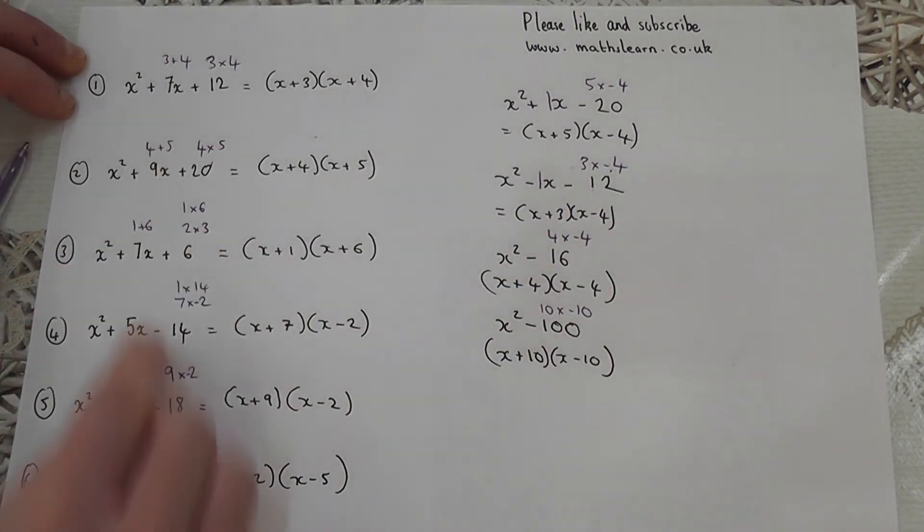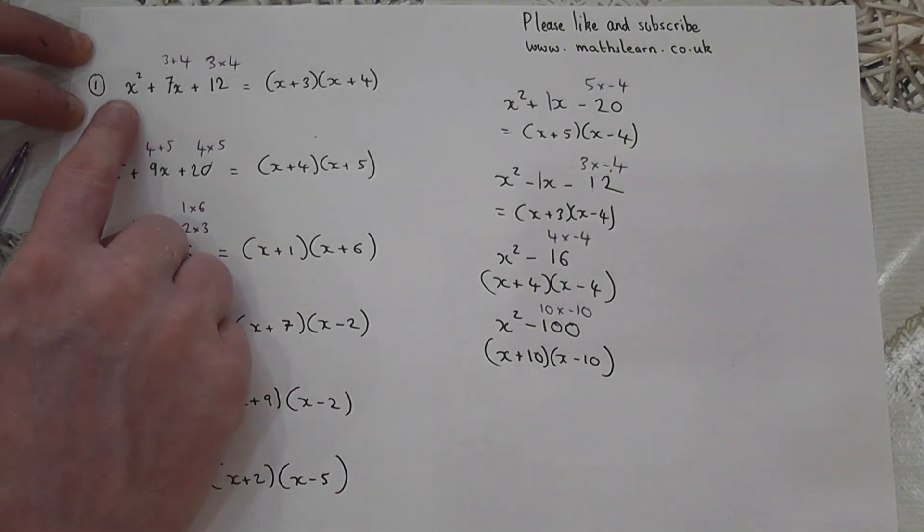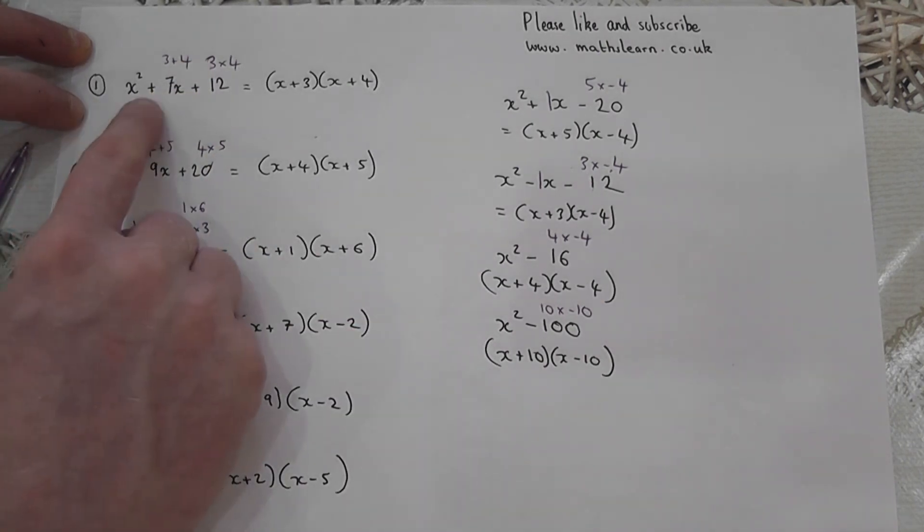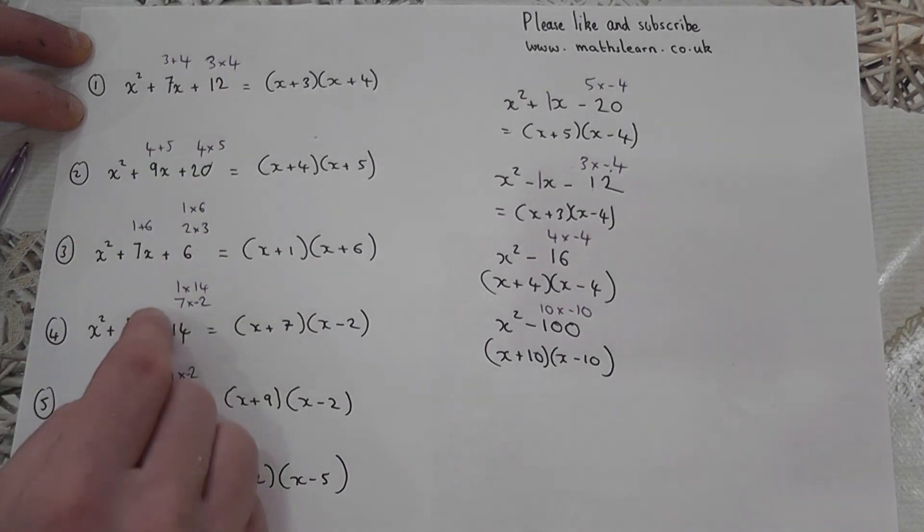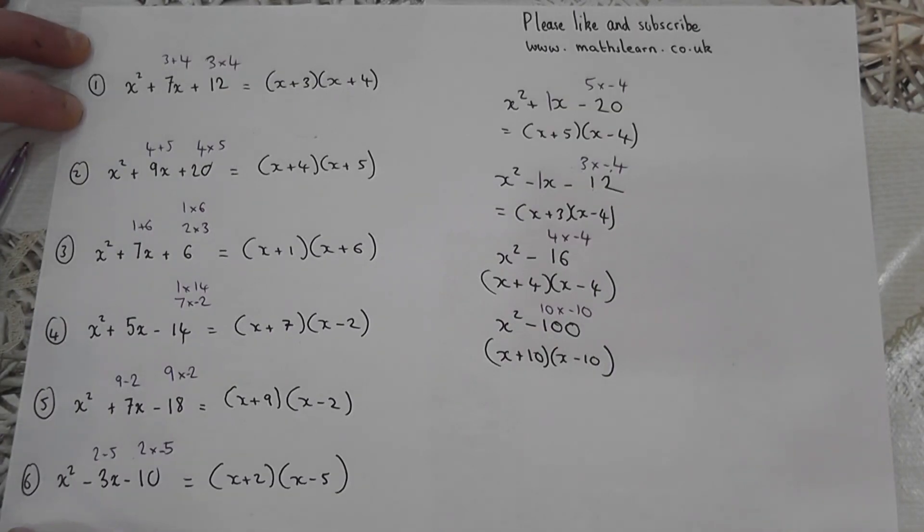These are the main factorizations when it's of the form x squared. Another video will look at when it's, for example, 3x squared or 5x squared. But these tricks and rules work when it's x squared plus an x term plus a number. Please do like and subscribe, and my videos have been compiled together on mathslearn.co.uk.